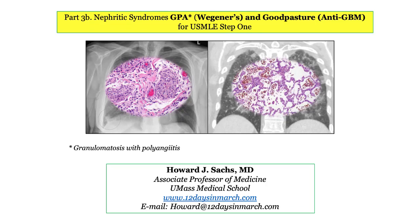Welcome back to Season 3 of 12 Days in March. In this presentation, we will continue our discussion of the nephritic disorders with a focus on Wegener's and Goodpasture syndromes. As with IgA nephropathy and post-streptococcal glomerulonephritis, these disorders travel together in Step 1 questions. A quick word on nomenclature: granulomatosis with polyangiitis has replaced the eponym Wegener's and will be used throughout this presentation, abbreviated as GPA.